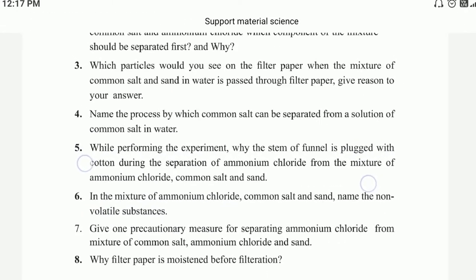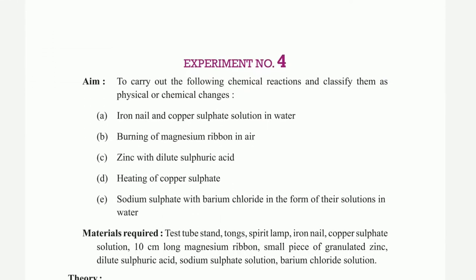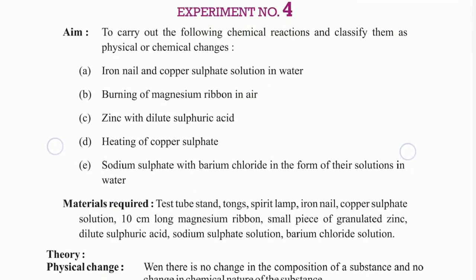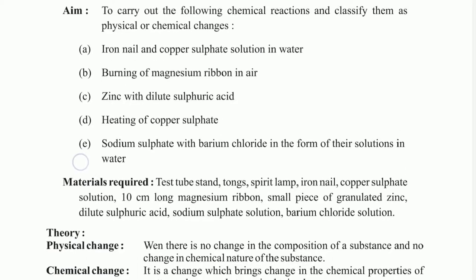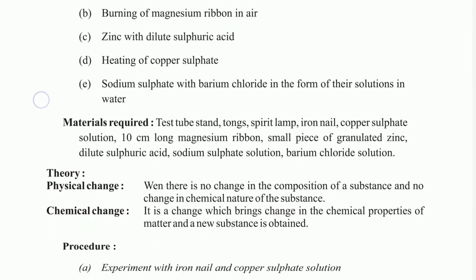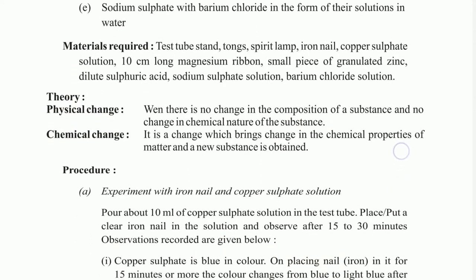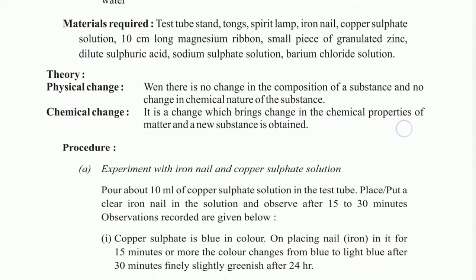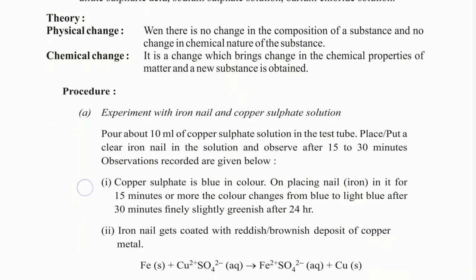Experiment number 4: aim is to carry out the following chemical reactions and classify them as physical and chemical changes. Materials required include a test tube. Theory covers physical change and chemical change, followed by procedure — experiment with iron nail in copper sulfate solution.